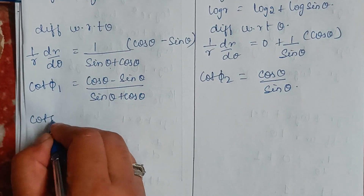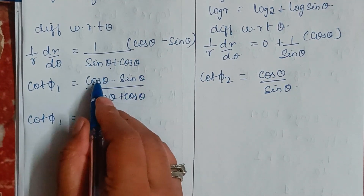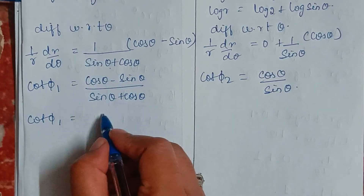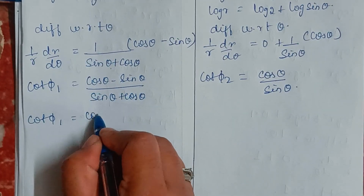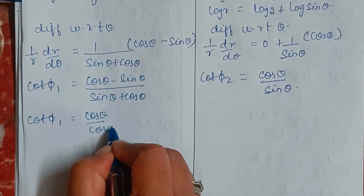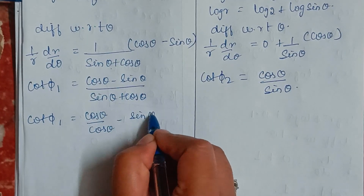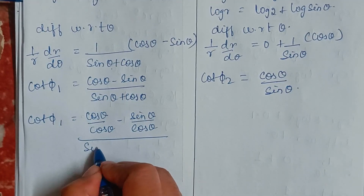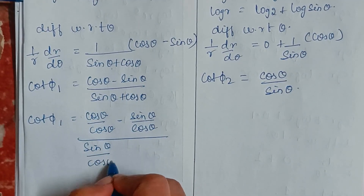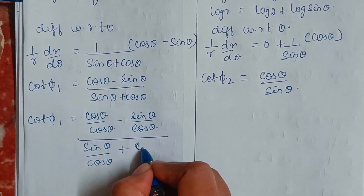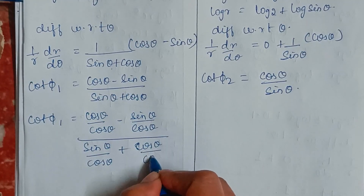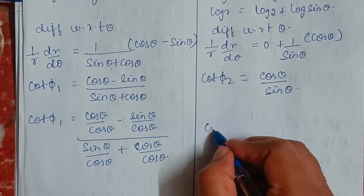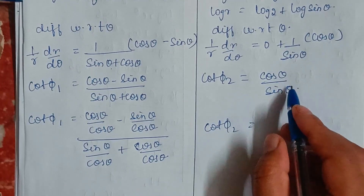Now I divide both numerator and denominator of cot φ₁ by cosθ. This gives (cosθ/cosθ − sinθ/cosθ) divided by (sinθ/cosθ + cosθ/cosθ).